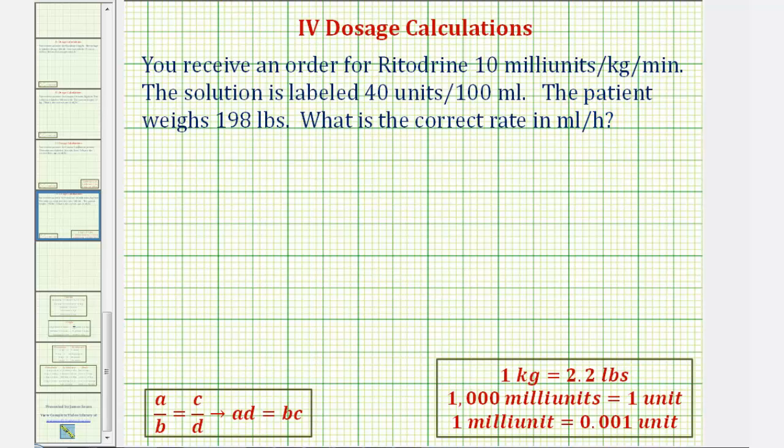So to find the flow rate, we'll have to perform several conversions. Notice how the order is given in milliunits per kilogram, but the weight is given in pounds. Let's begin by converting 198 pounds to kilograms, and we'll do this using a proportion.